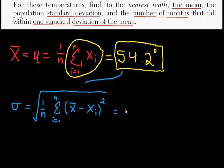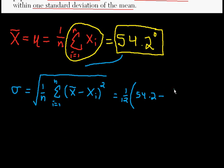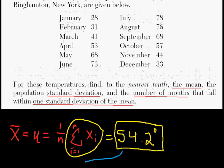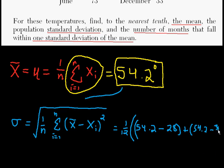And what this is basically saying is it wants 1 over 12, because there are 12 data points. And then it's going to be 54.2 minus the first data point, which is 28. And then we're going to add that to 54.2 minus the next data point, which is 31. And each one of these is going to be squared. And we're going to continue that until the very end to the last data point. That's what we're doing in this giant expression.